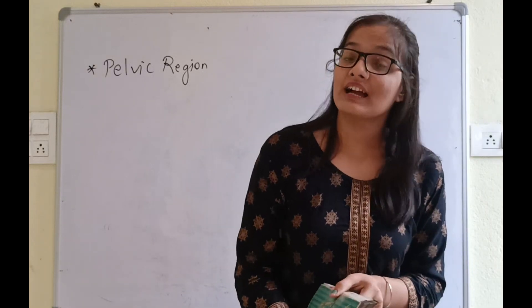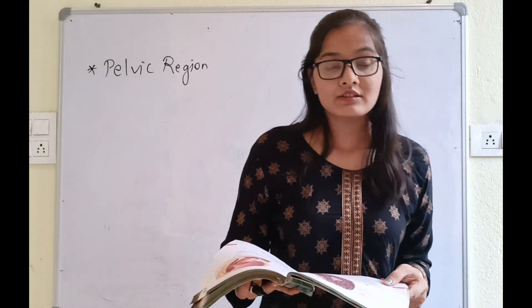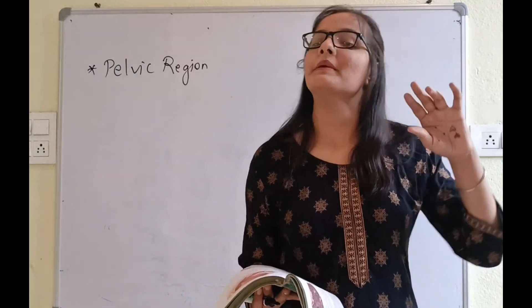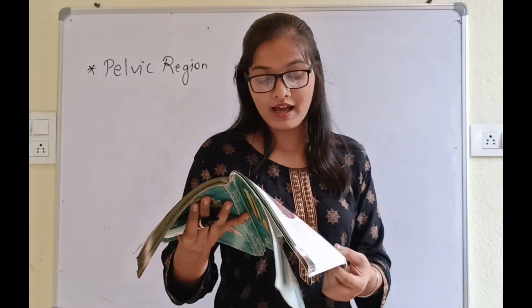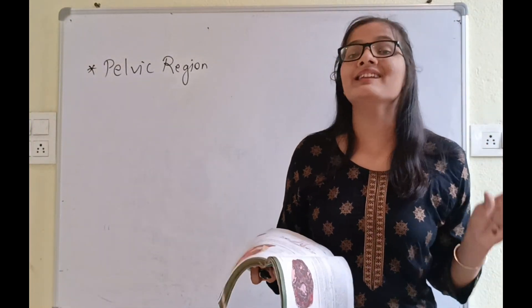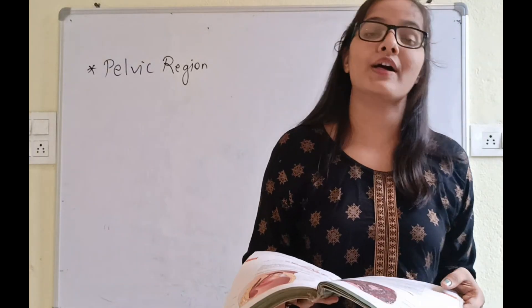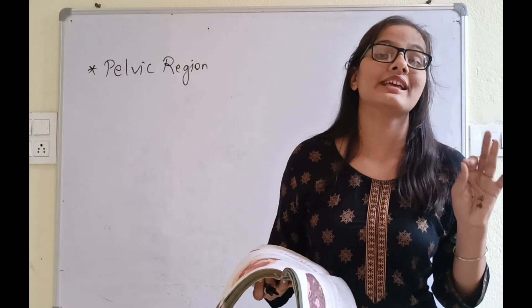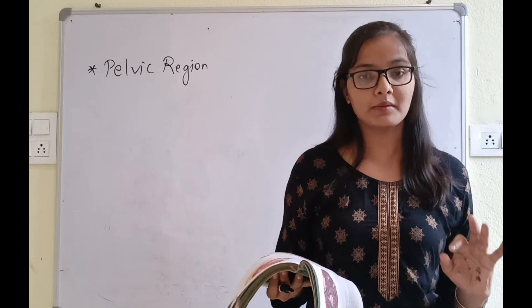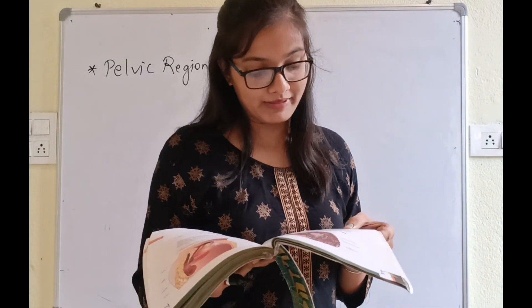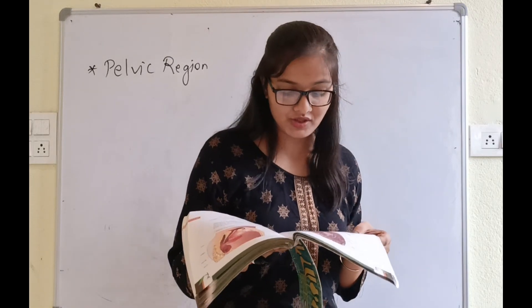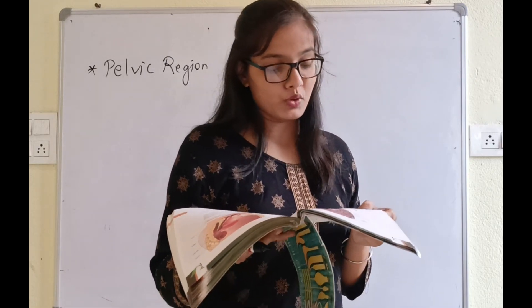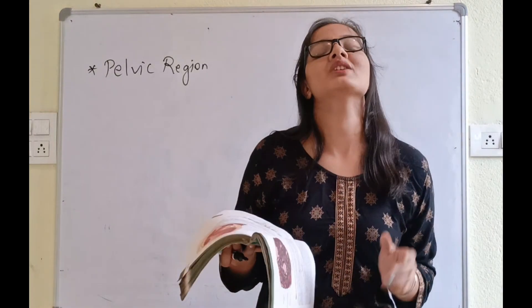We have studied male accessory ducts and male accessory glands. Now for female: a pair of ovaries - that is the primary sex organ - oviduct pair, that is the fallopian tube, uterus, cervix, vagina, and external genitalia. These parts of the system along with a pair of mammary glands are integrated structurally and functionally to support the processes of ovulation, fertilization, pregnancy, birth, and child care.